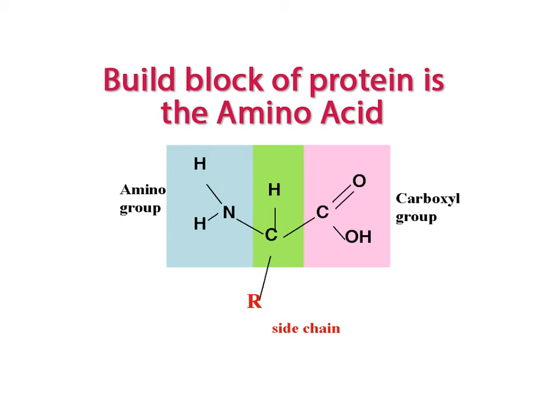Recall from Unit 2 that the basic building block of a protein is the amino acid. But how are the right amino acids added in the right sequence to match the sequence of codons in the mRNA?